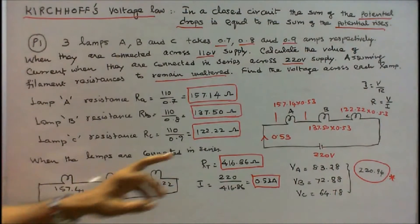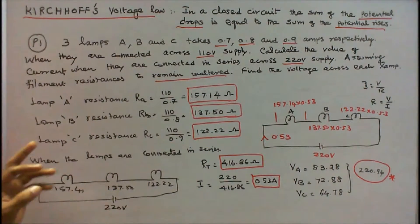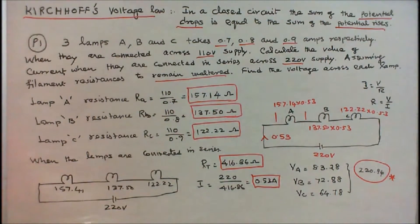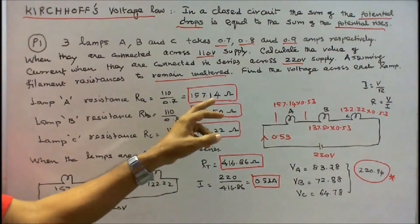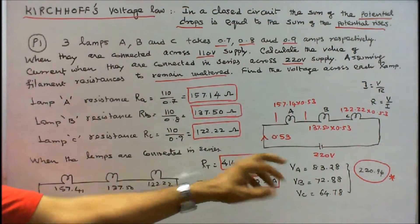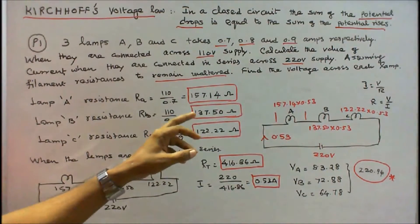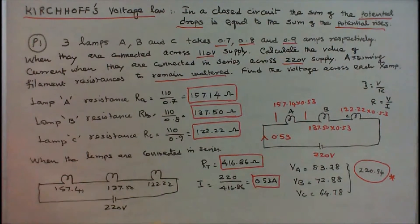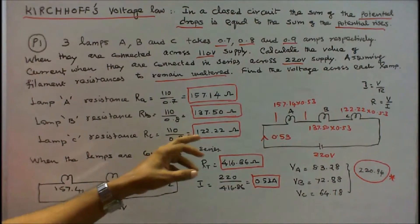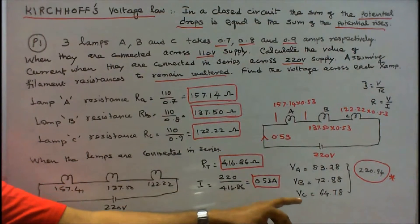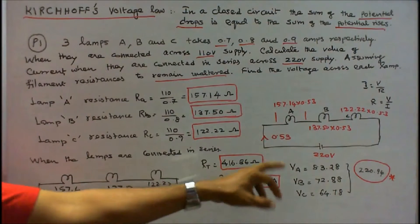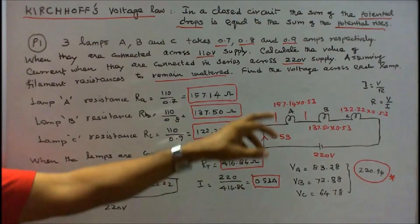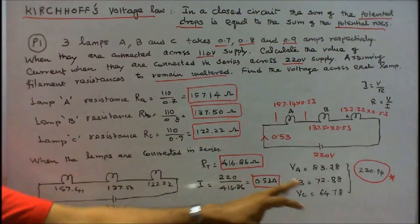The current is 0.53 amps. All are connected in series, so current is constant. We can easily find the voltage drop across each resistor: 157.14 × 0.53 = 83.28 V; 137.5 × 0.53 = 72.88 V; 122.22 × 0.53 = 64.78 V. V_A plus V_B plus V_C is equal to 220.94, and the supply voltage is 220. The sum of the voltage drops across each lamp is equal to 220V.